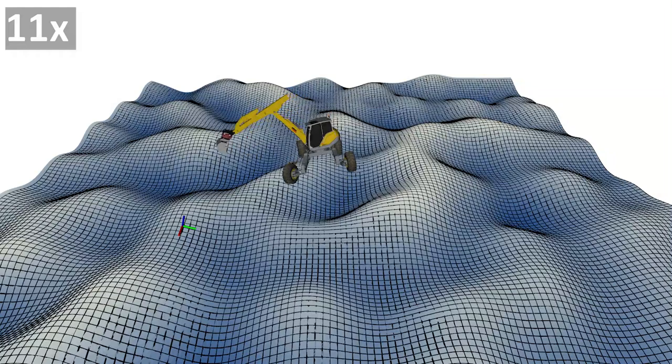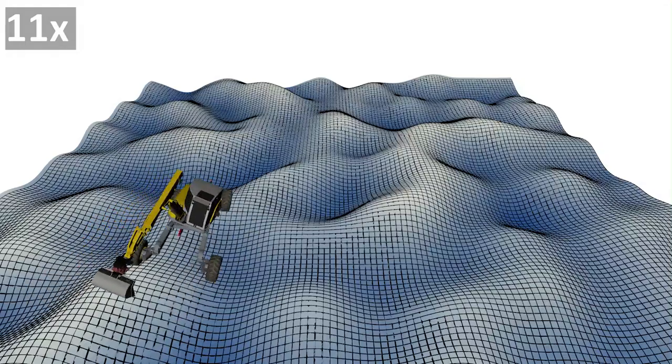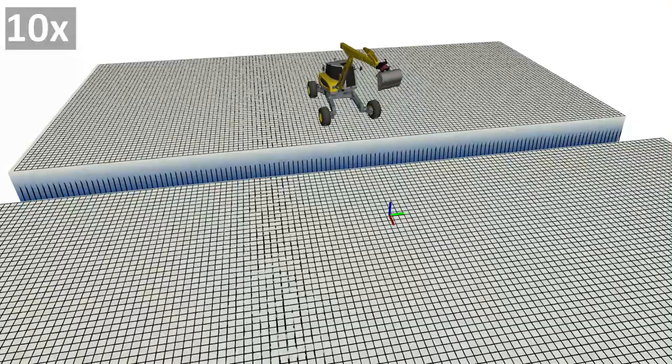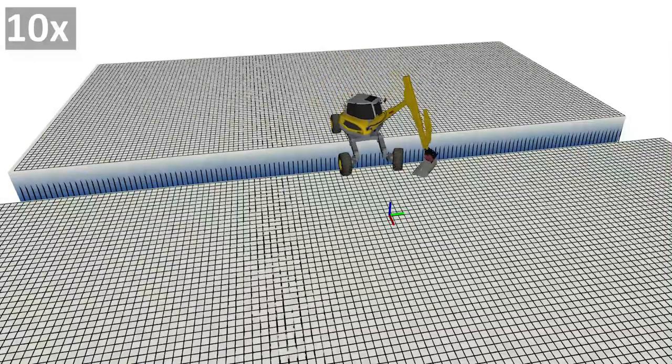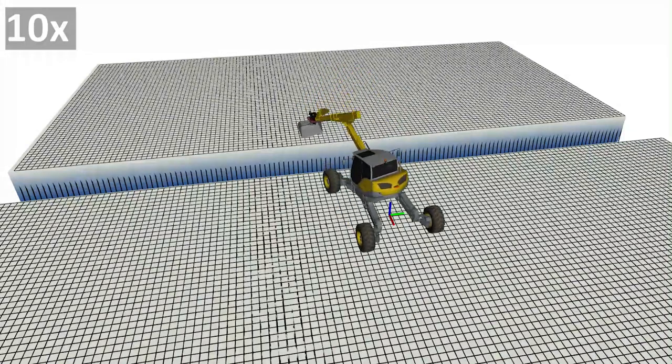We present a combined sampling and optimization-based planner that can generate motions in challenging terrains for legged-wheeled machines. Our use case is motivated by walking excavators which have four legs and an arm, however the planner could be used with different morphologies as well.